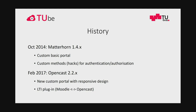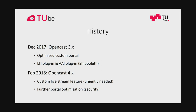A few words about the history. The first launch of our portal was in October 2014, back then with Matterhorn 1.4. In February 2017, a major upgrade to Opencast 2.2 with LTI plugin. Then December 2017, Opencast 3.x LTI plus AAI with our C++ ID provider — works great. And then in February 2018, we introduced this custom live stream feature, which was urgently needed, which I will also be talking about in more detail today.